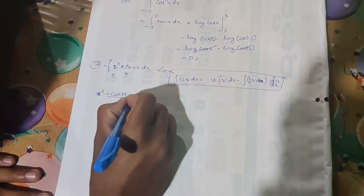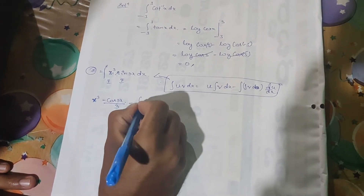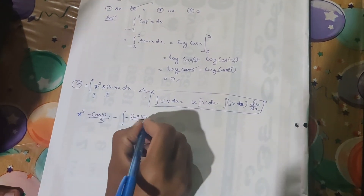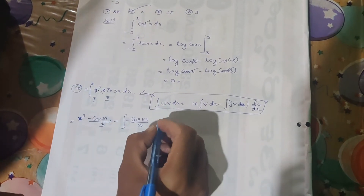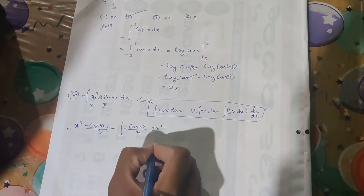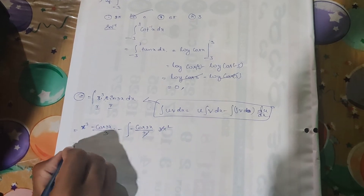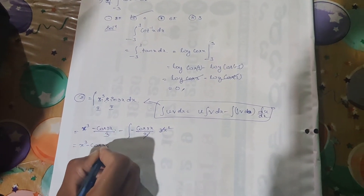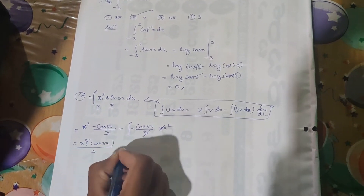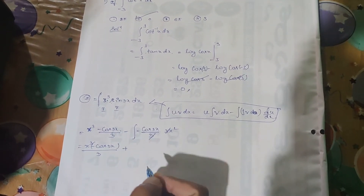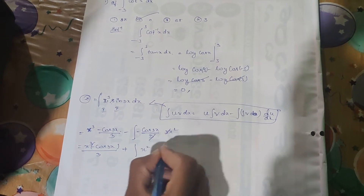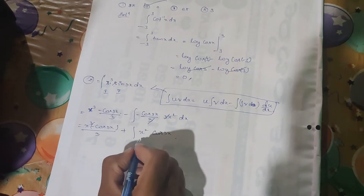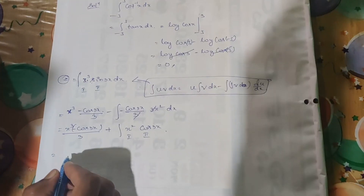The integration of minus cos(3x) divided by 3, and the differentiation of x to the power of 3 is 3x squared. The 3 and 3 cancel, leaving x to the power of 3 times minus cos(3x) all divided by 3, and minus into minus will be plus. Then we continue with x squared into cos(3x).